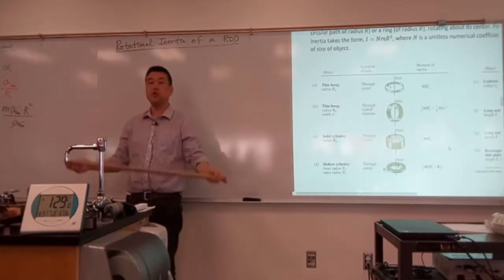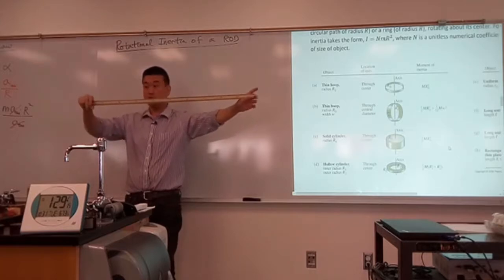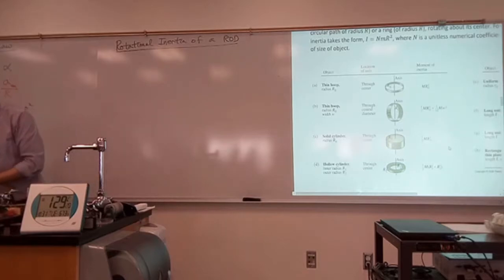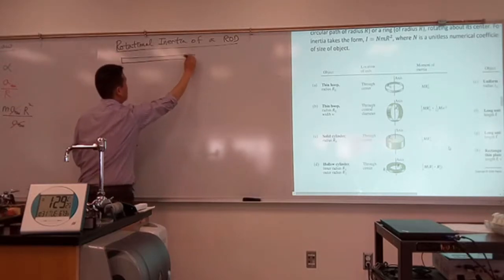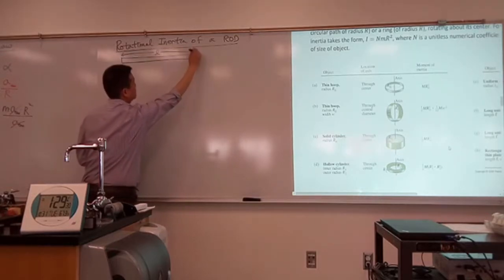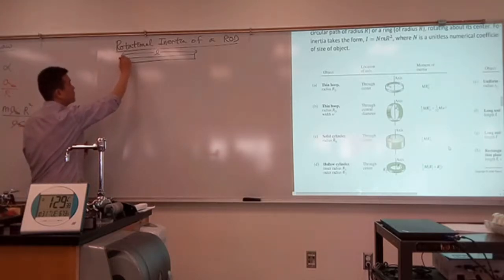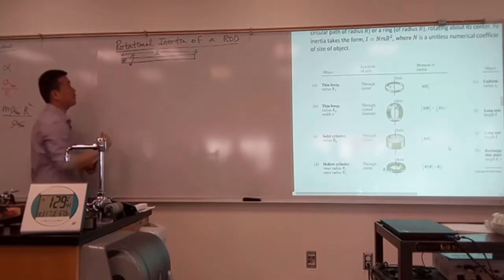So let's say somebody asked you: what is the rotational inertia of a rod of length L, being rotated about its endpoint? Let's say we have a rod of length L, and I'm choosing to rotate it about one of its endpoints. So this is my center of rotation, and I'm rotating it back and forth either way.